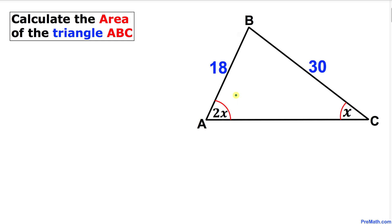Welcome to pre-math. In this video tutorial we have triangle ABC such that length AB is 18 and length BC is 30, and moreover this angle A is twice as much as angle C.